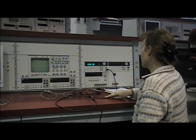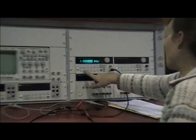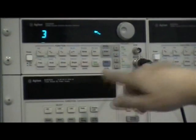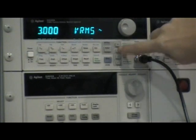The purpose of this tutorial is to understand the function generator display. To turn on the function generator, set the amplitude to 3 volts RMS.